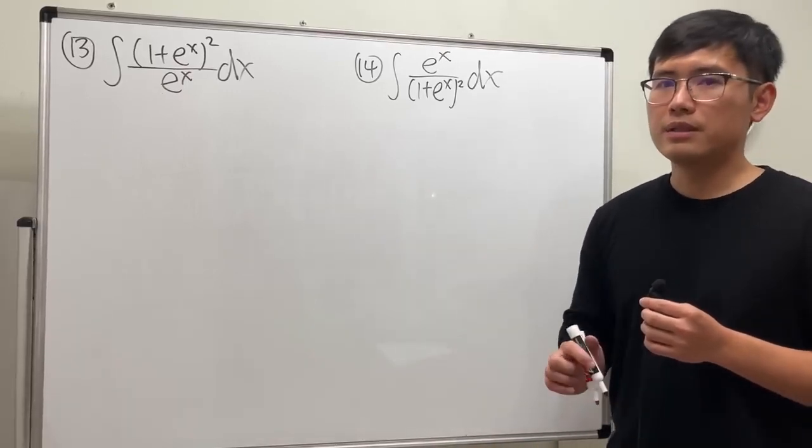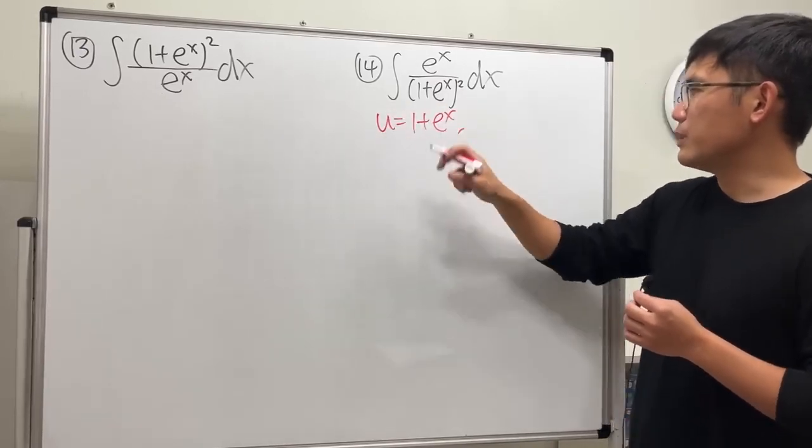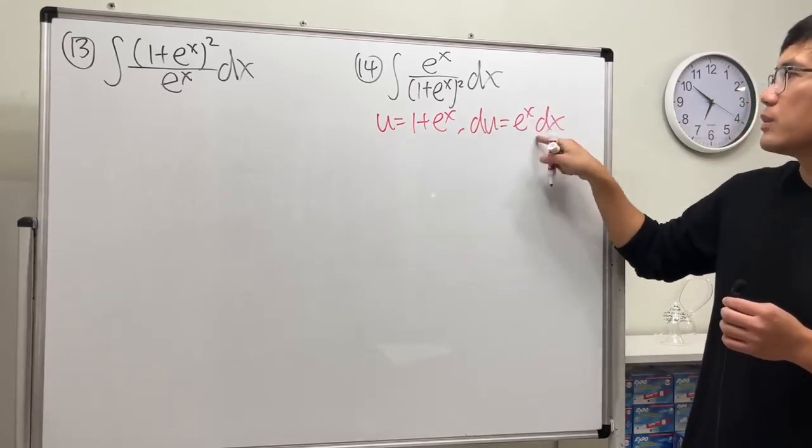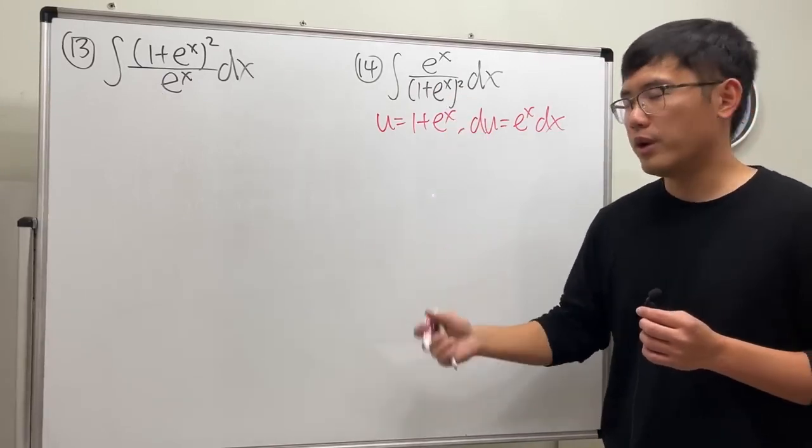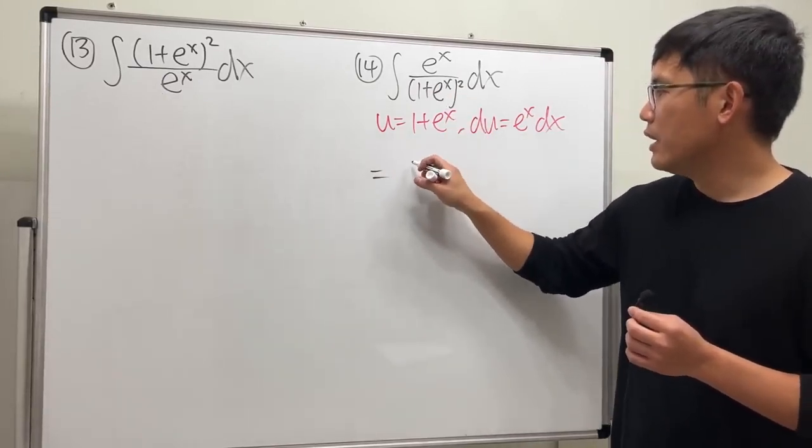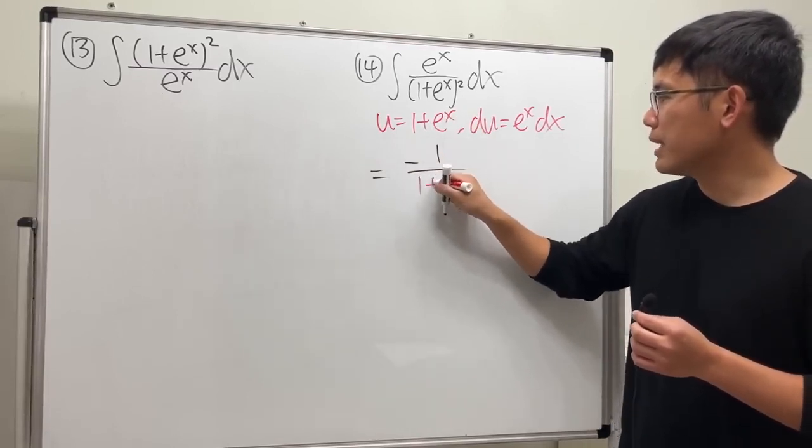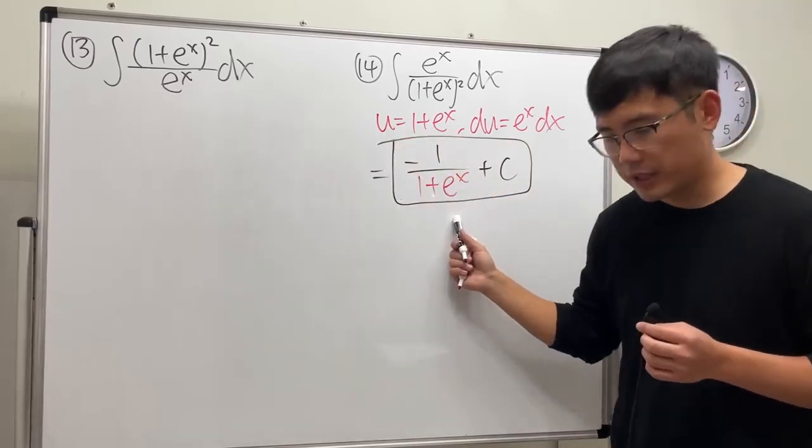this one because I can just finish this with u-sub where u equals the inside, 1 plus e to the x. We see that du equals e to the x dx, which is that. So just have to integrate 1 over u squared, and the answer for that is negative 1 over u, and u is that, so 1 plus e to the x, and then we are done. So this is number 14.